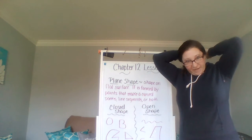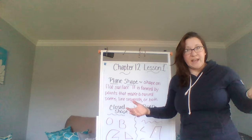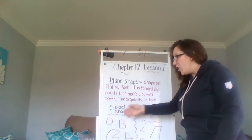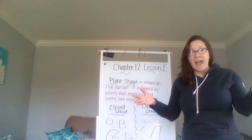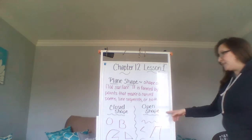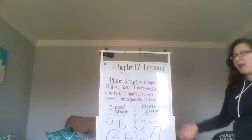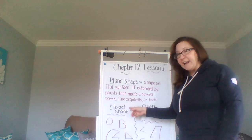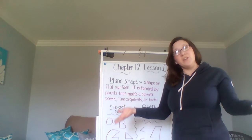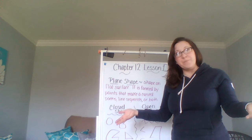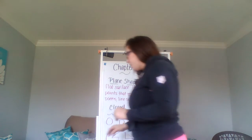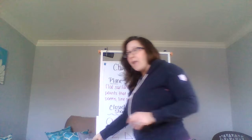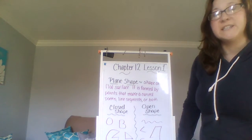A closed shape means it's closed. I like to say: if I was a leprechaun, could I get out of your shape? If I can get out, then it's considered an open shape. If I cannot get out, then it's considered a closed shape. Pretty simple. Now we're going to learn a few different vocabulary words that you will need to know throughout this whole chapter.